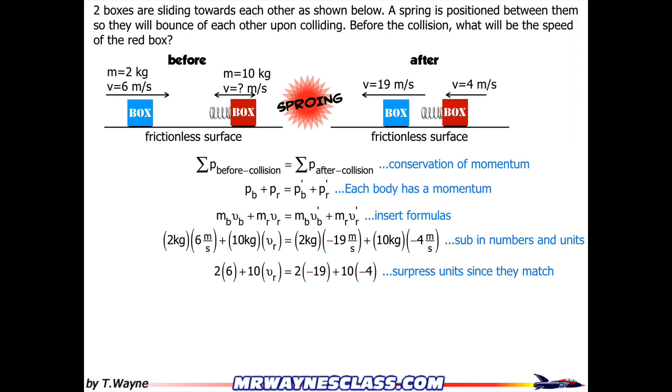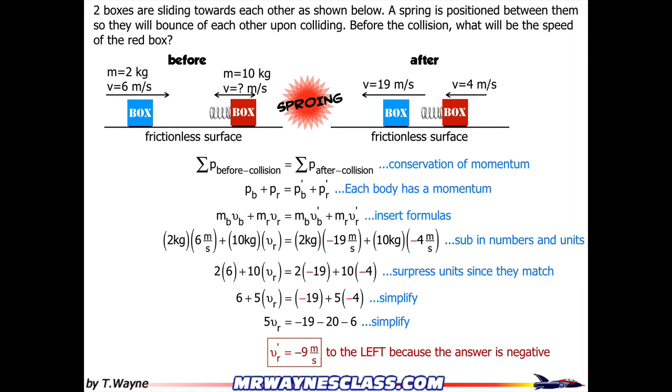So I'll suppress the units since they all match. I can kind of take a look at the math. I'll simplify by dividing everything by 2 in this case, and then I'll isolate my unknown variable and I get my velocity of the red afterwards is negative 9 meters per second.